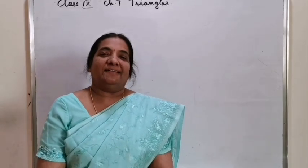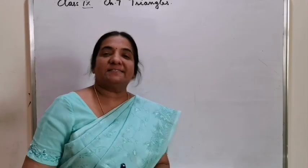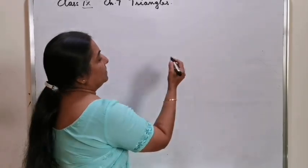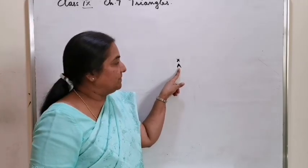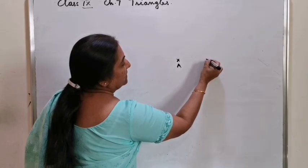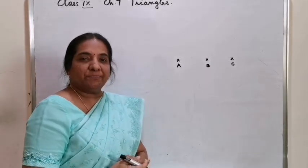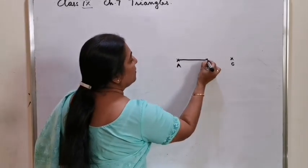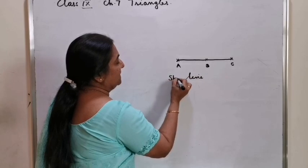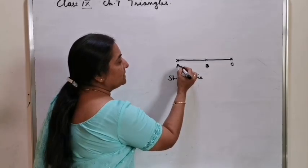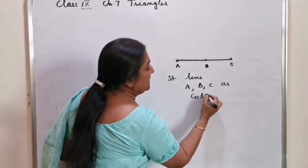Good morning children. Today we are going to start with chapter 7, Triangles. Point A represents a position. Suppose you are given 3 points in these positions as mentioned. If I join all these 3 points, you are getting a straight line and so we call the points A, B, C as collinear points.